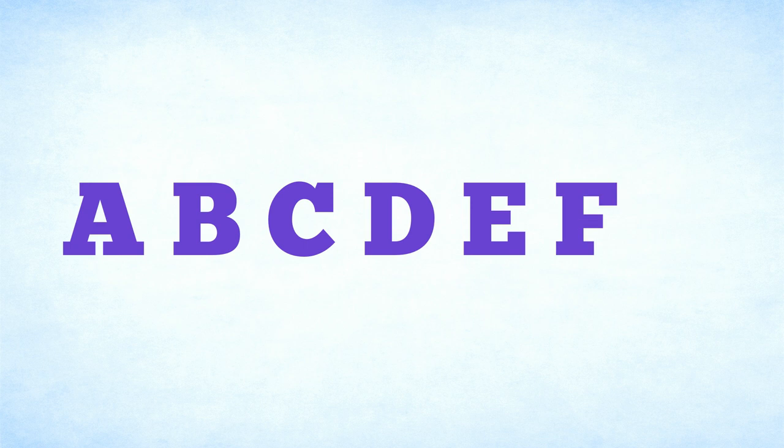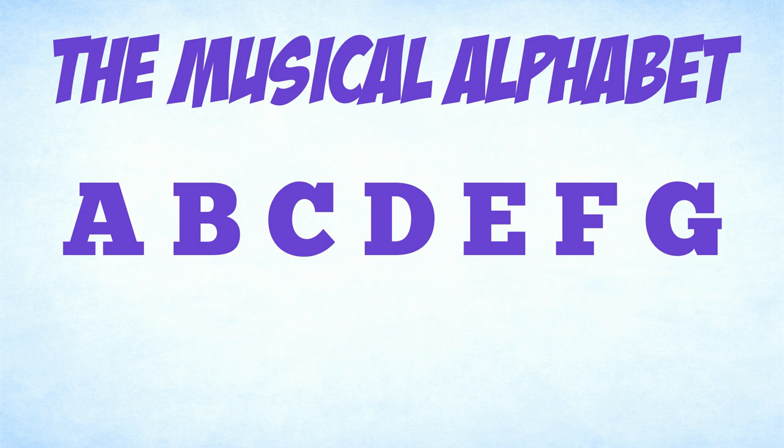Individual pitches are called notes. The notes in music are named after letters of the alphabet: A, B, C, D, E, F and G. This is the musical alphabet.